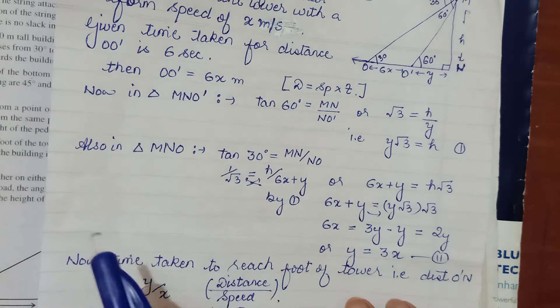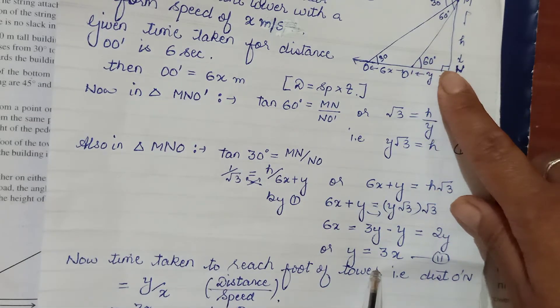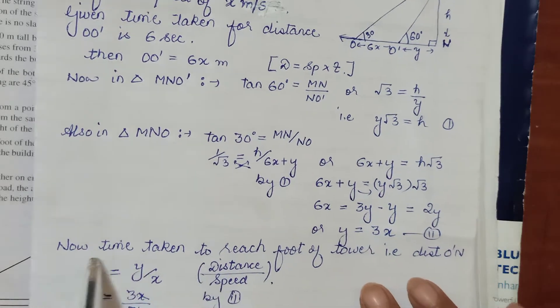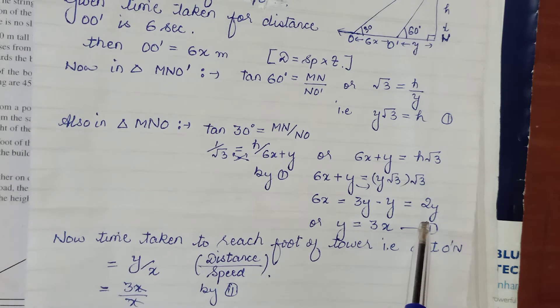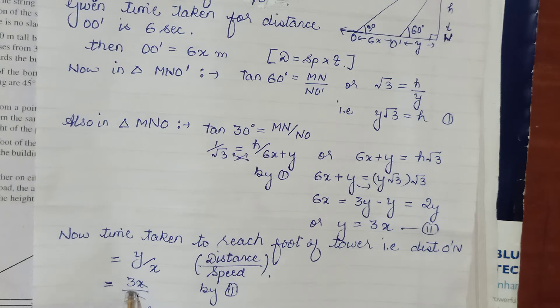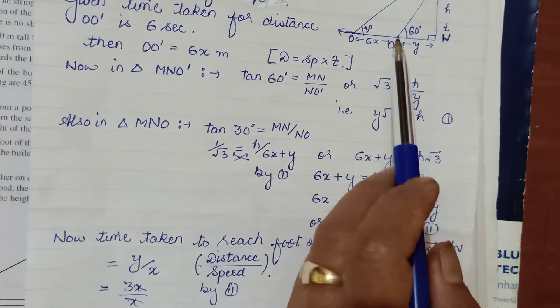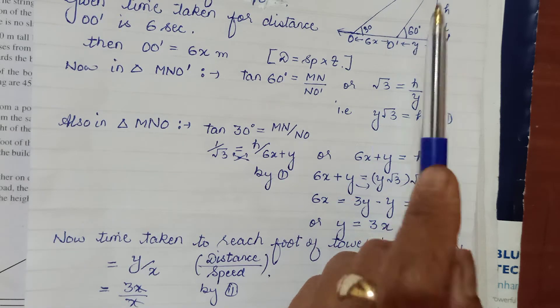Now we don't have to find distance. We have to find time. But to find that time, we had to find distance. So we have evaluated this distance also. This is the distance to be covered, and for this, time is asked from us. And we know time is given by distance upon speed. So we have found the distance. Distance was 3X. Speed was assumed as X meter per second. So X and X gets cancelled. That means your time comes out to be 3. That means in 3 seconds it will reach from O' to the foot, that is N.